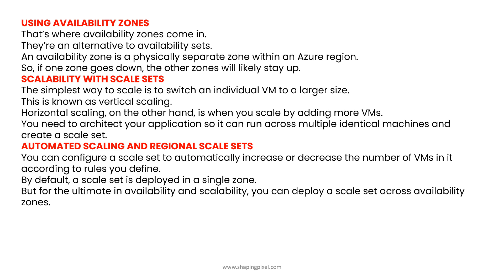You can configure a scale set to automatically increase or decrease the number of VMs according to rules you define. By default, a scale set is deployed in a single zone, but for the ultimate in availability and scalability, you can deploy a scale set across availability zones.